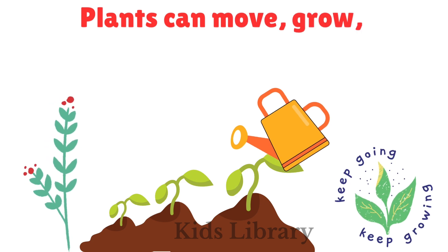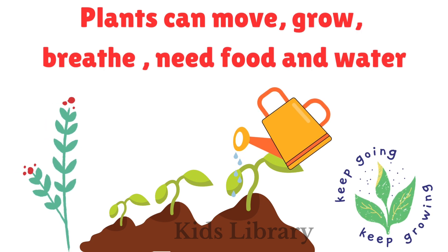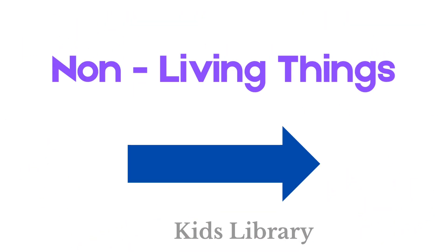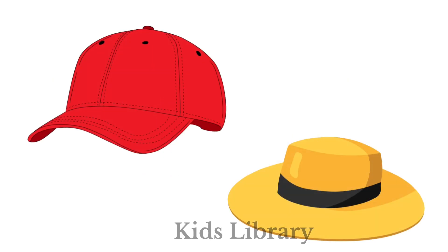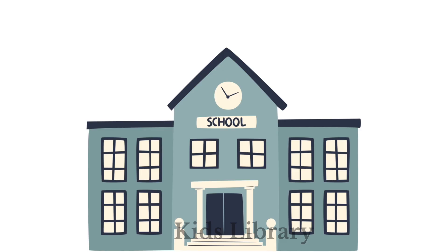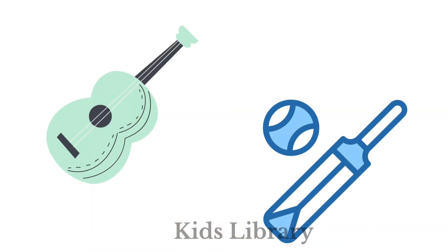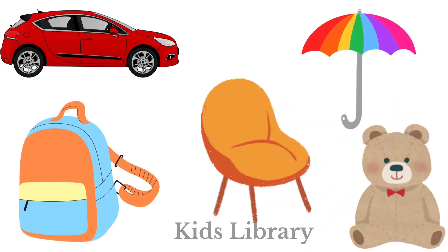Plants can move, grow, breathe, and need food and water. Examples of non-living things include a hat and cap, a school building, a bat, ball, guitar, car, umbrella, teddy bear, chair, and bag.